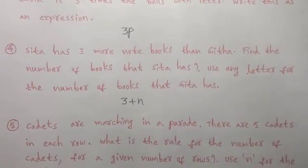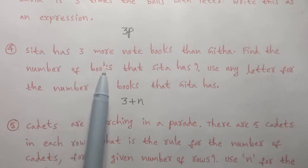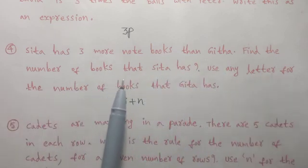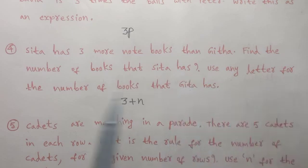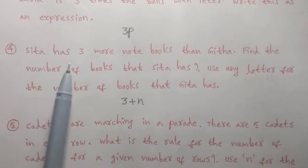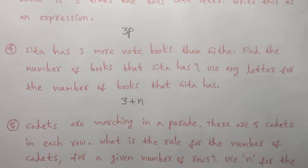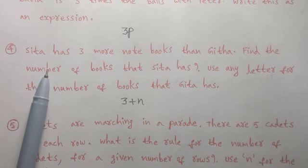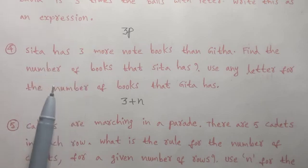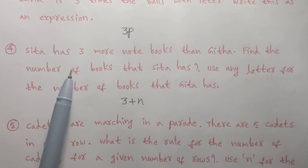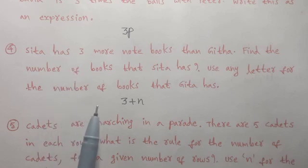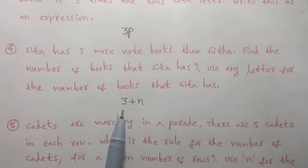Fourth problem: Sita has 3 more notebooks than Gita. Find the number of books that Sita has, using any letter for the number of books Gita has. For example, if Gita has 10 books, Sita has 10 plus 3 equals 13. If Gita has 25 books, Sita has 25 plus 3 equals 28. So the algebraic expression is n plus 3.